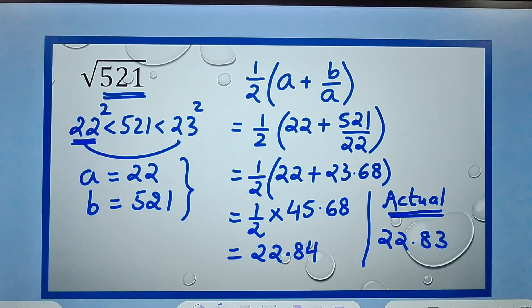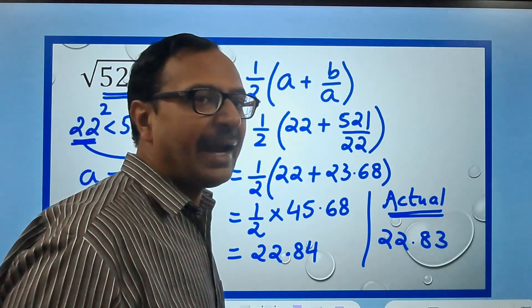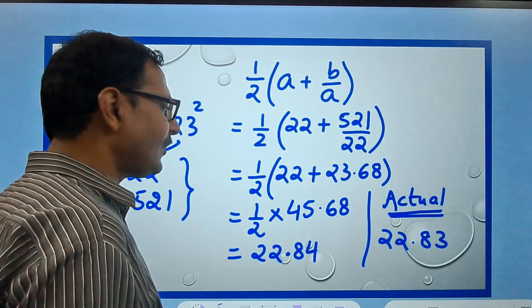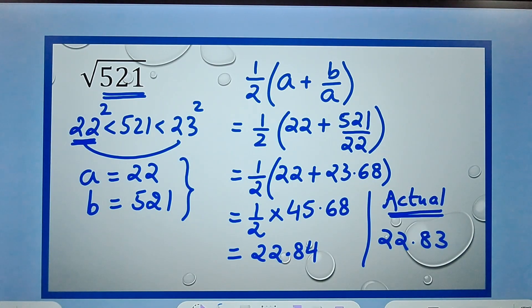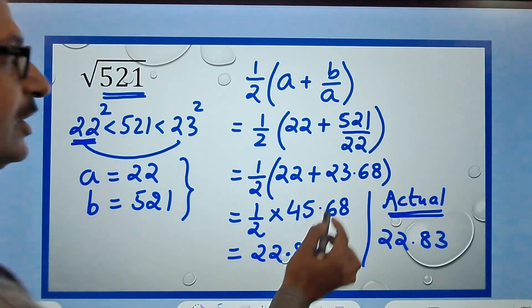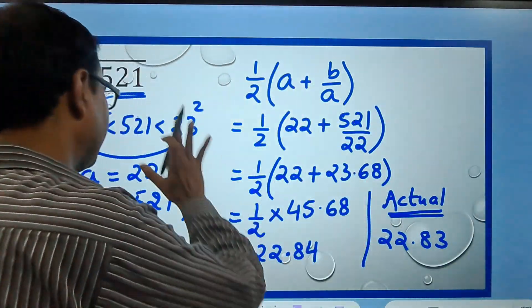But it solves our purpose in like 98 percent of the cases. Nobody is going to deduct marks if you write 22.84 in place of 22.83, at least up to school level. This provides a very good method through which you can find the square root of imperfect square numbers. You just have to do this one particular division. Apart from that, everything is mental math calculations.